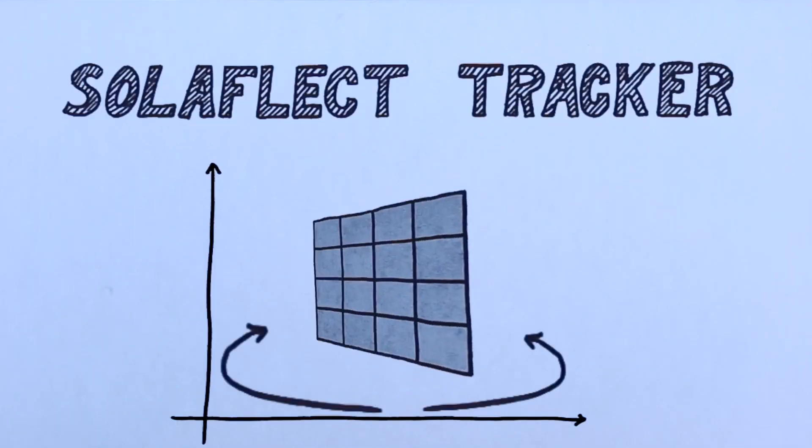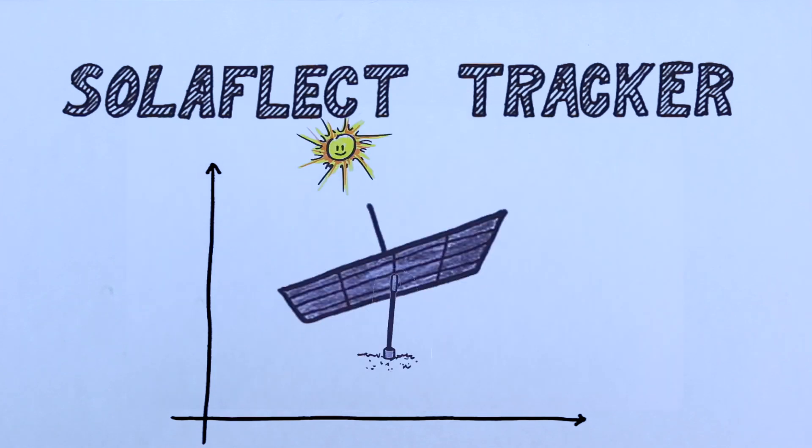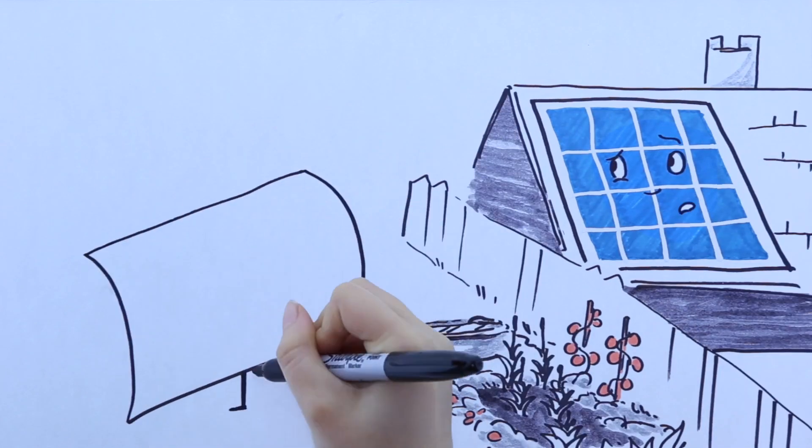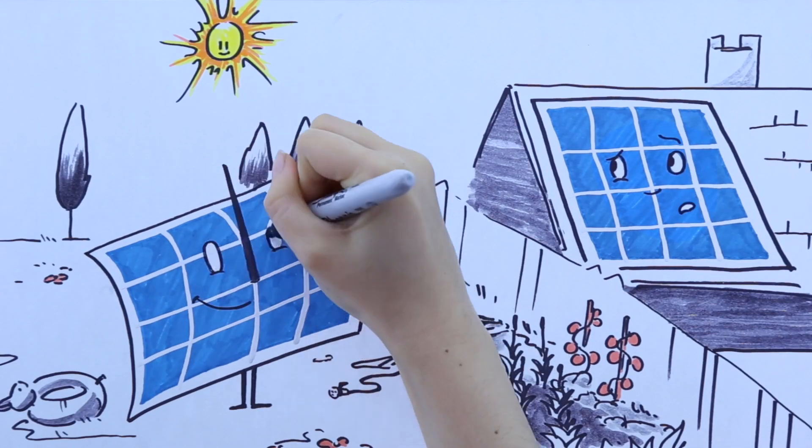Solaflex dual-axis trackers are designed to move, following the trajectory of the sun from dawn to dusk. Unlike a fixed panel, a Solaflex tracker maintains optimal positioning throughout the day.